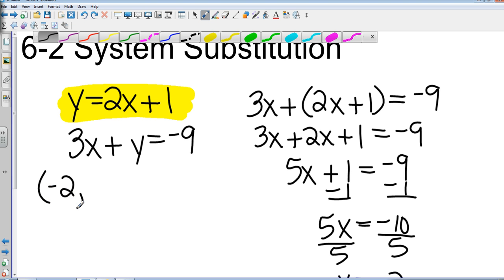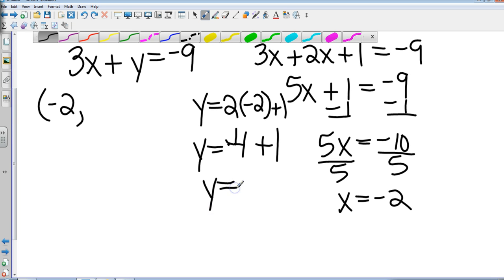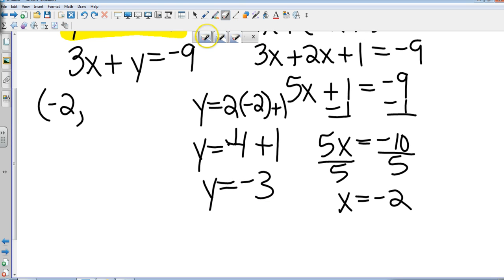Now to find my y coordinate, I can substitute that x value back into either one of those equations. I'm going to take the first one. y equals 2 times negative 2 plus 1. y equals negative 4 plus 1. So that tells me that y equals negative 3. So now my y coordinate is negative 3.